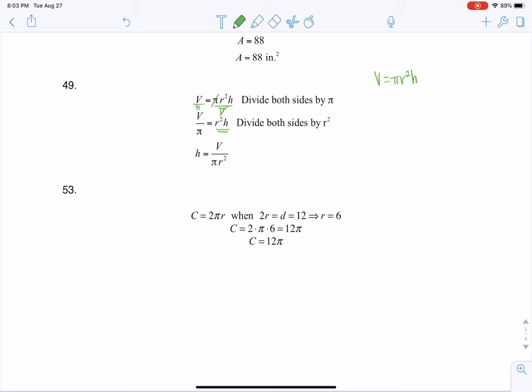But I still don't have H isolated. So if I want to isolate H, what I'm going to do next is I'm going to divide both sides by R squared. And then you can see that the R squareds cancel out, and that leaves me with just the H.